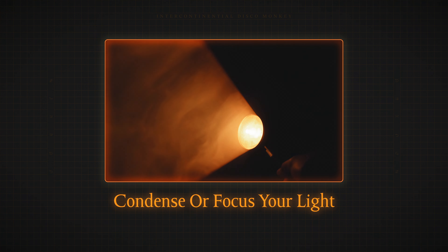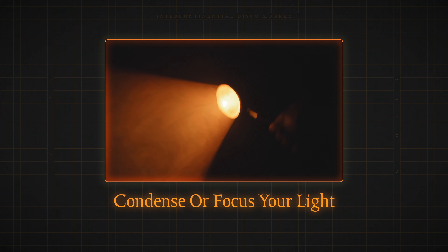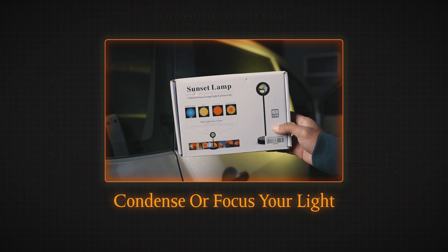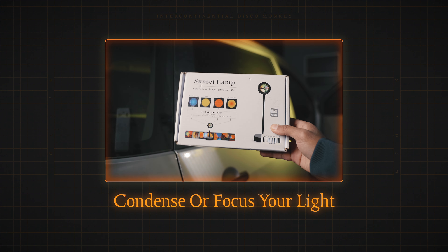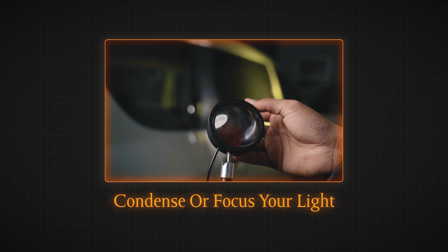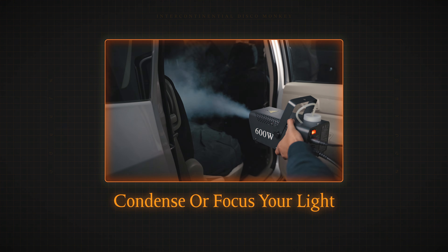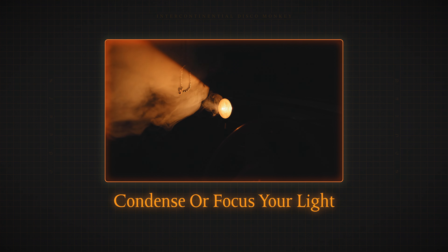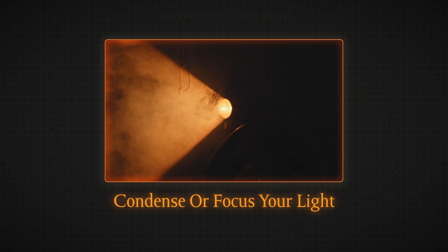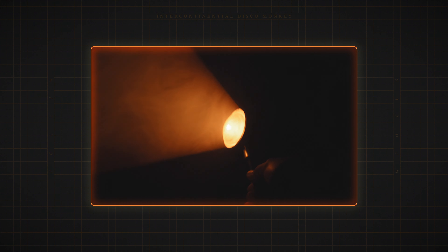Another thing I learned: if you want defined light rays directly from the light without having to block it, your light needs to be very condensed. What I did was buy a cheap sun lamp — it has a magnifying glass attached to it to condense the light into a circle. After using the smoke machine in the car and bringing in that light, it was the only light source in the warm scenes. Since it's very condensed because of the magnifying section, it immediately has this clean, powerful light ray effect which added to that ethereal look I was going for.